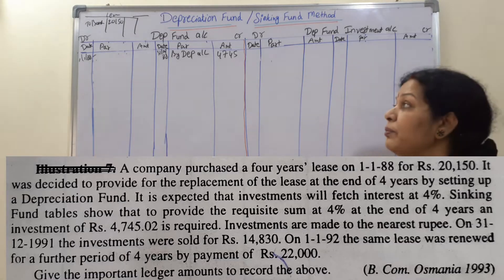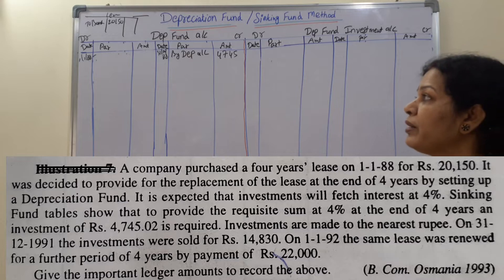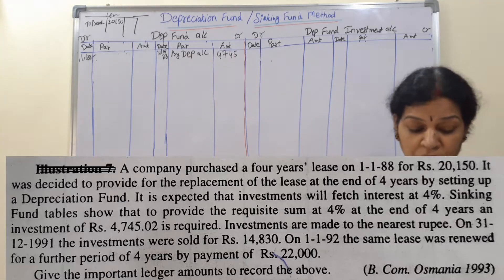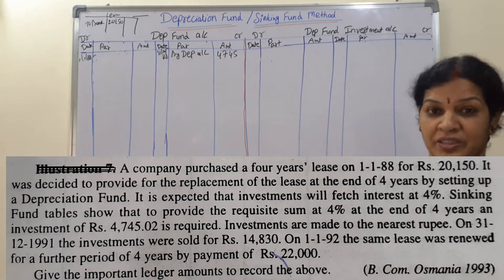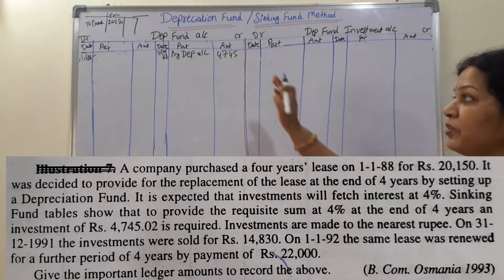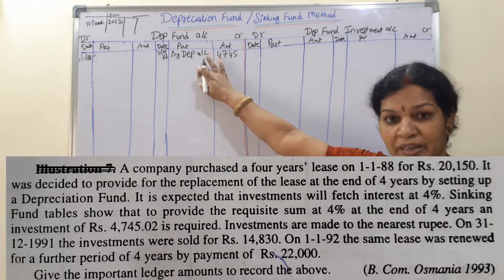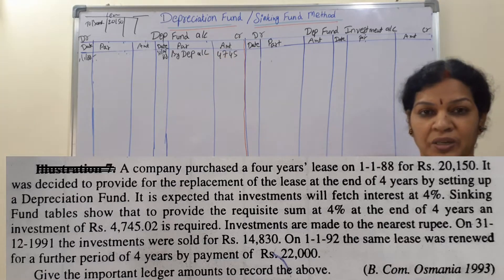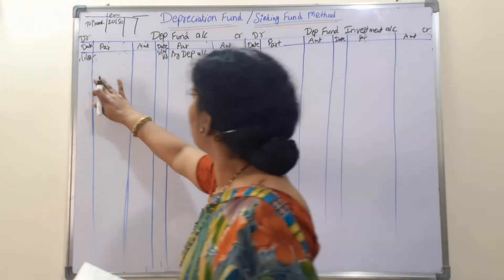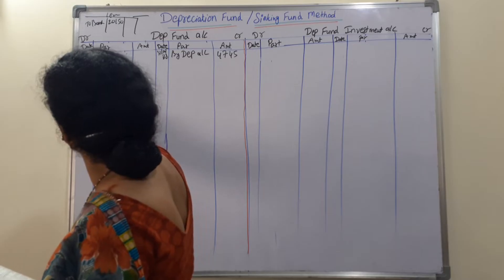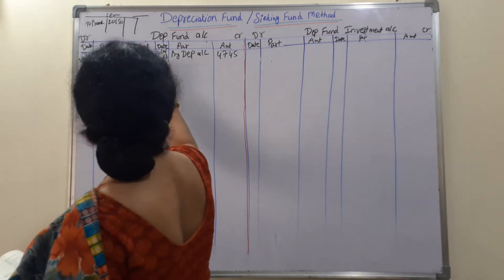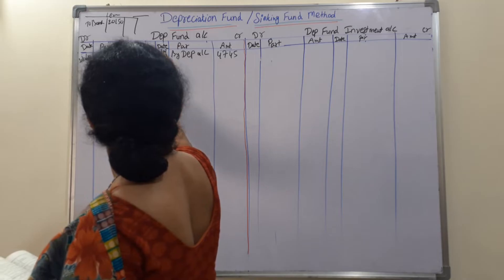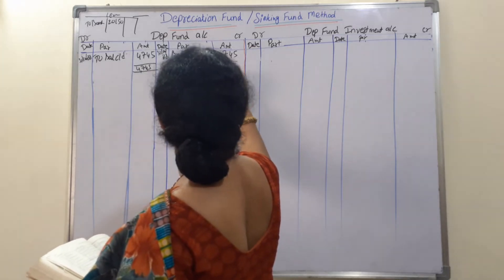Now we have to prepare the fund account. Depreciation is 4,745 and for the first year we do not calculate any interest, because depreciation is provided at end of year. So we have provided first year depreciation fund account by depreciation: 4,745. We will carry down 4,745 to balance carried down for the first year ending 31/12/88.